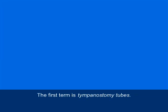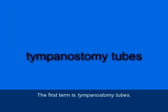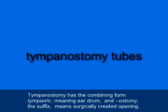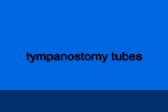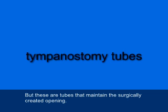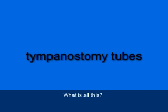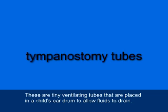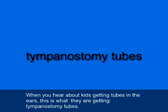The next two terms get kind of tricky and are often confused. The first term is tympanostomy tubes, T-Y-M-P-A-N-O-S-T-O-M-Y, and then tubes. Tympanostomy has a combining form, tympano, meaning eardrum, and the suffix ostomy means a surgically created opening. These are tiny ventilating tubes placed through a child's eardrum to allow fluids to drain. When you hear about kids getting tubes in their ears, this is what they're getting — tympanostomy tubes.